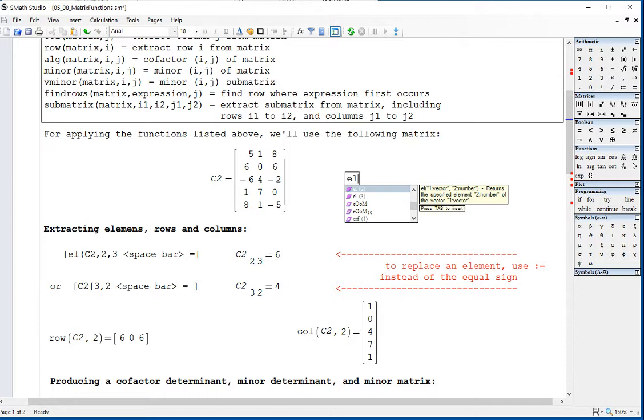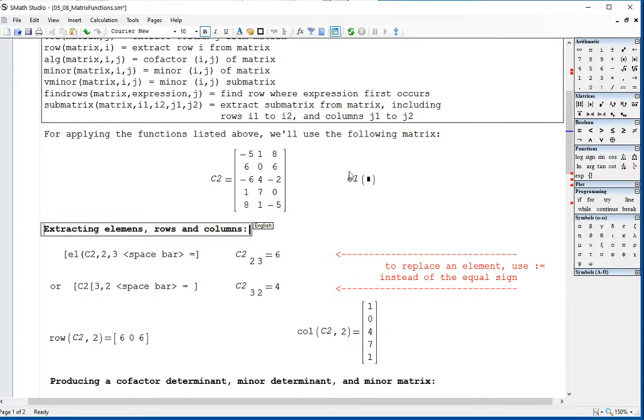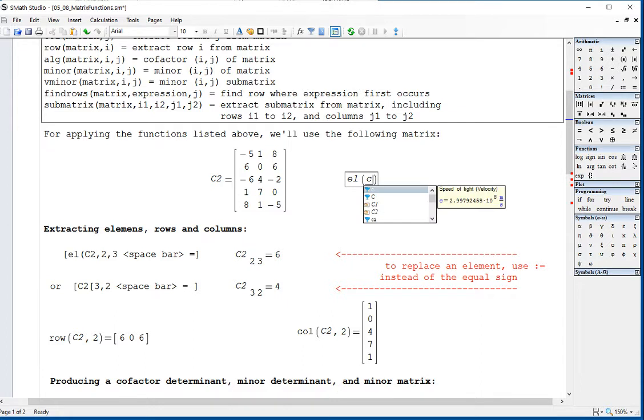For example, the EL element function, if we apply it to matrix C2, uppercase C2. Okay, there we got it. And the second row, third column, you get that second row, third column, you get that element.